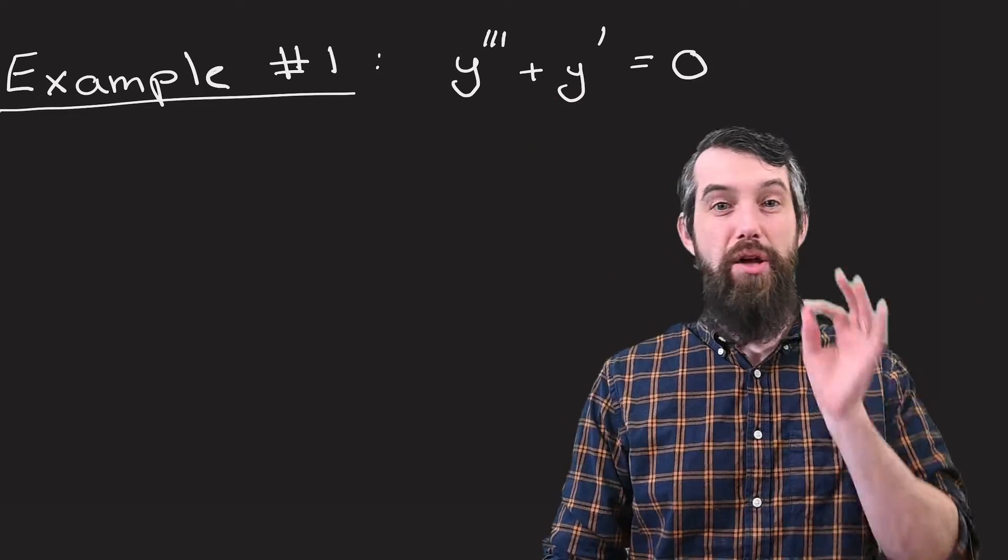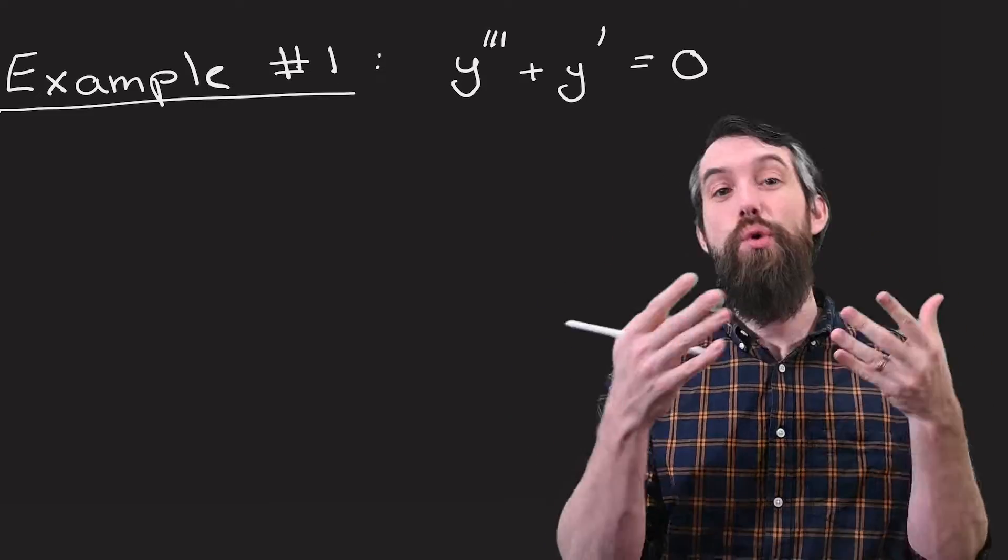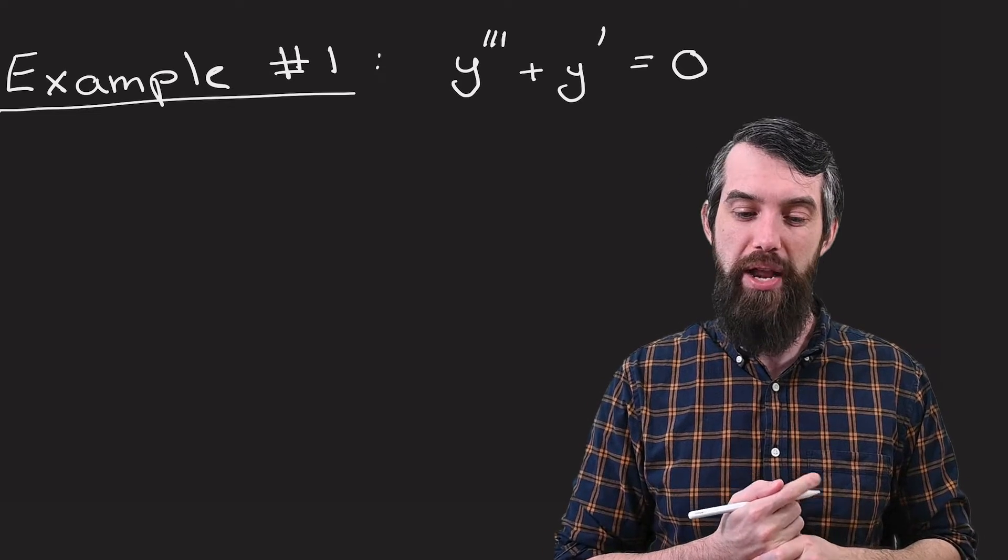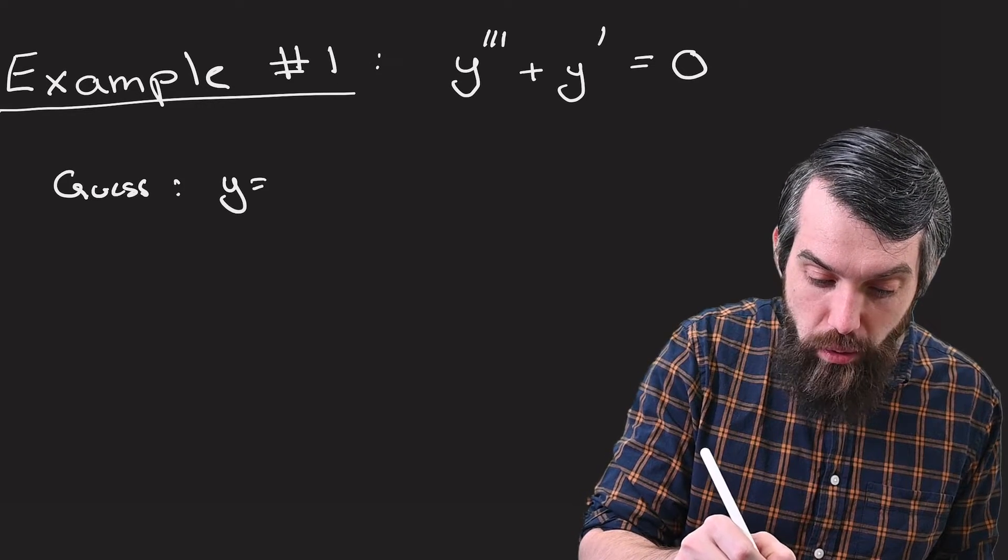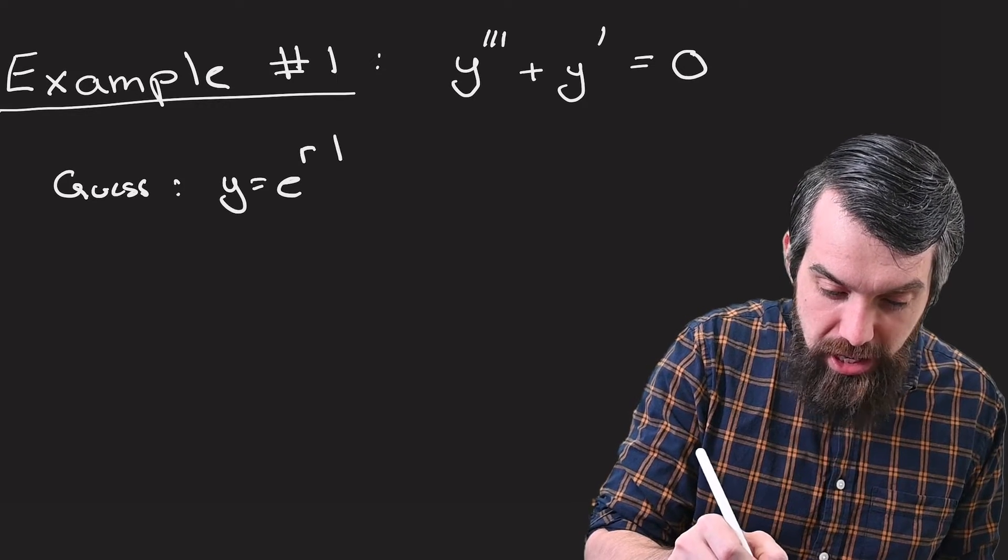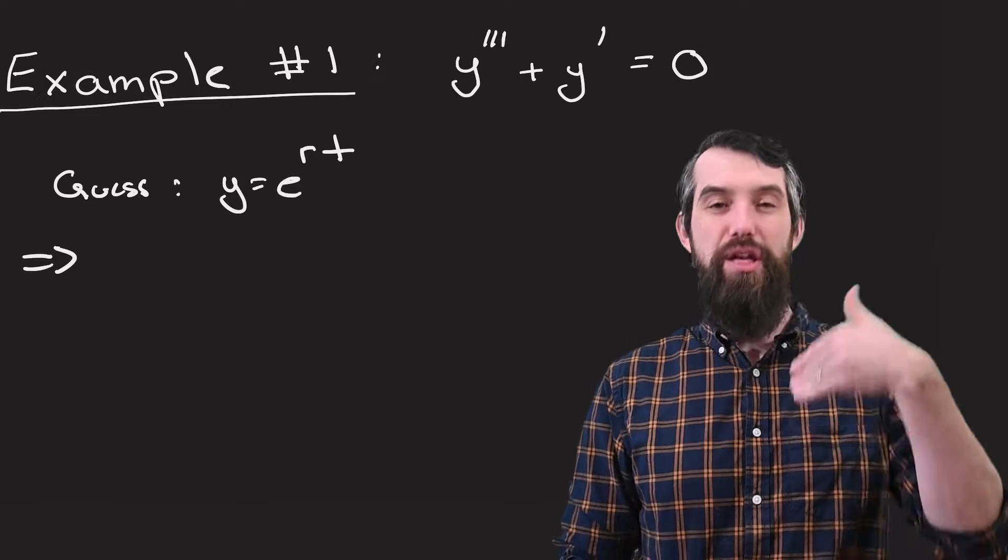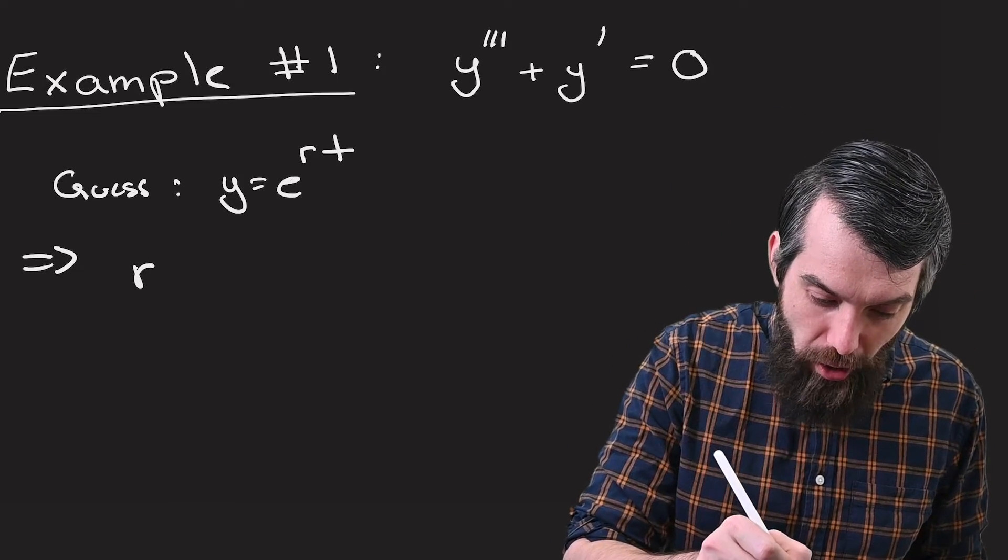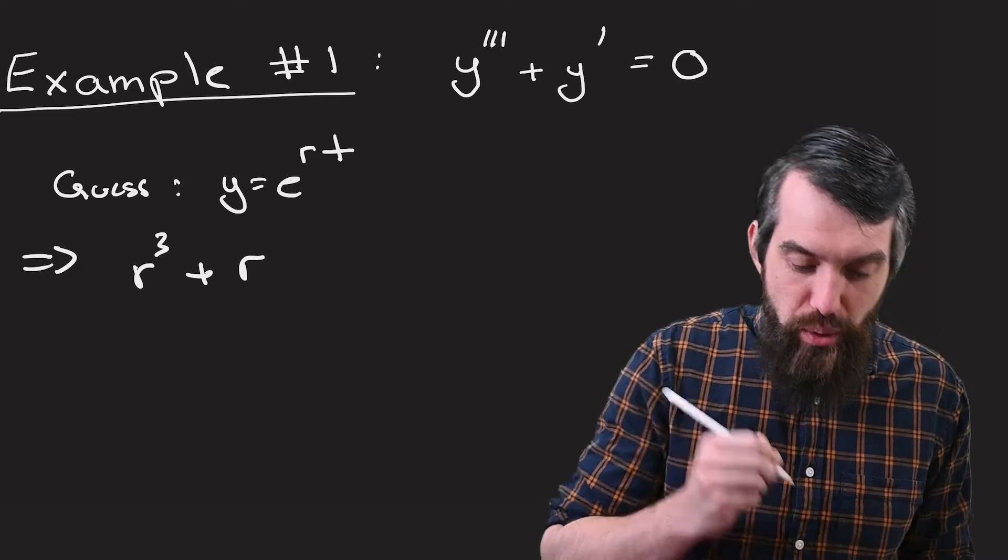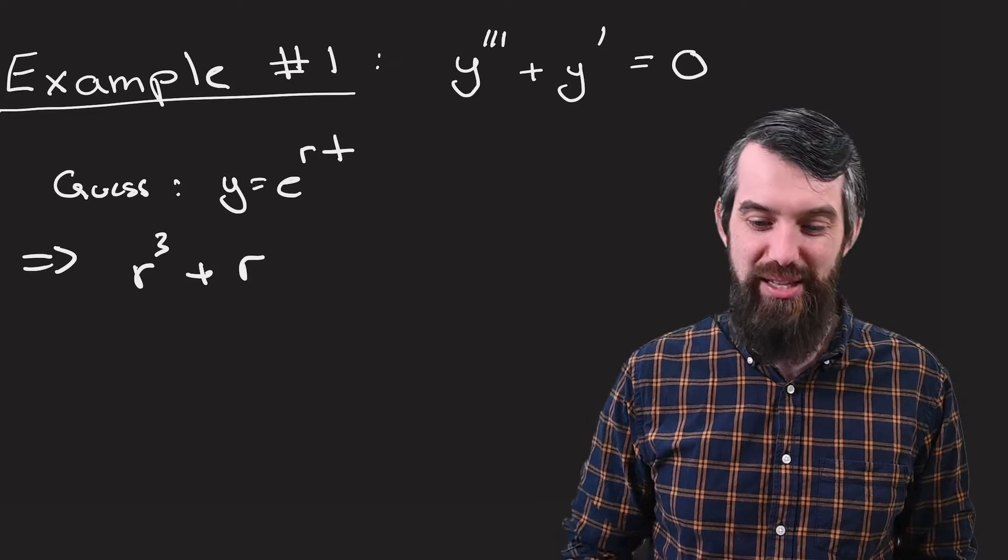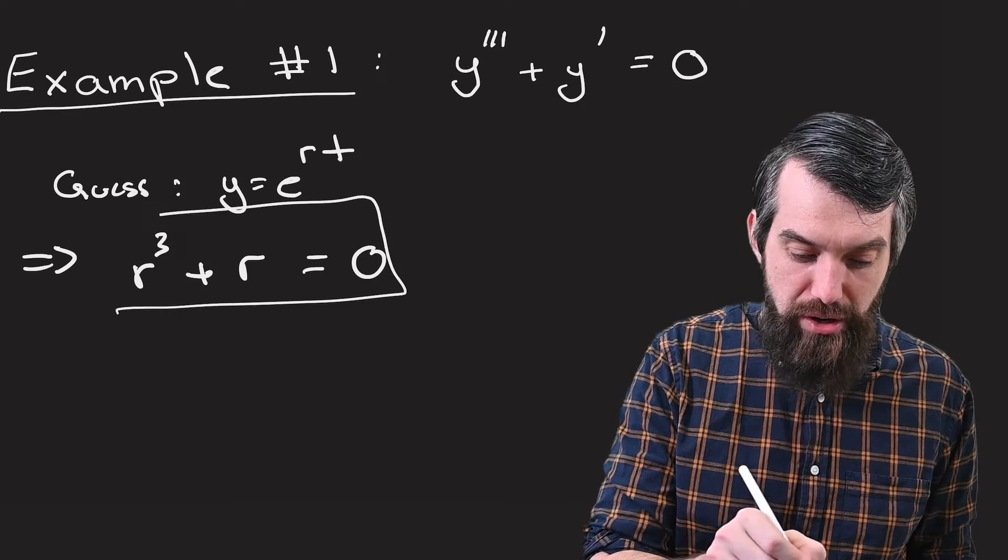Now the methodology to solve this is very similar to the methodology we've used previously to solve second-order constant coefficient differential equations. What we're going to do is guess a solution of the form y equals e to the rt. If you substitute that in, you get a so-called characteristic equation. Three derivatives gives you r cubed times e to the rt, one derivative gives you r times e to the rt, and this equals zero. Canceling out the e to the rt's, you're just left with r cubed plus r equals zero, the characteristic equation.